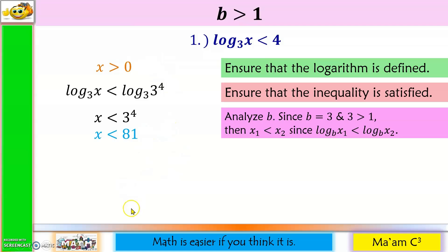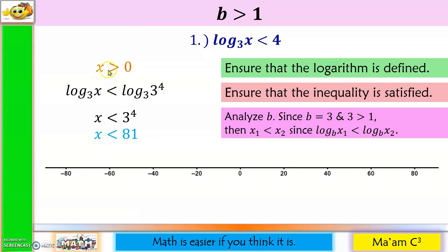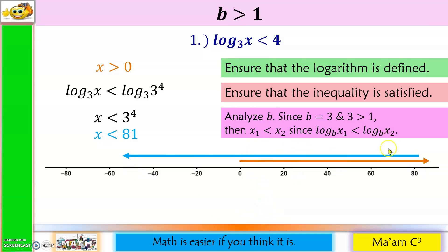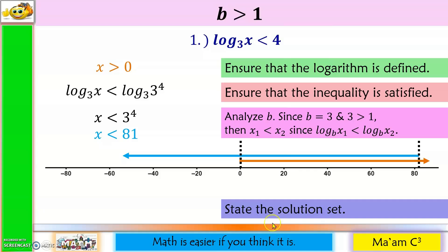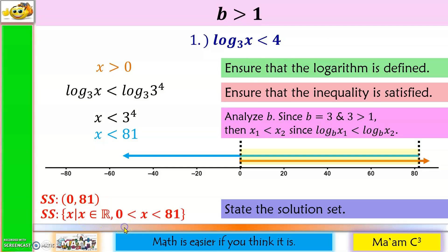Now we have two conditions. Let us plot them on a number line. Starting with x is greater than 0: here is 0, going to the right. Then we have x is less than 81, going to the left. We find the intersection of these two graphs to state our solution set. The intersection is from 0 to 81. So our solution set is (0, 81) — both parentheses because there is no 'or equal to.' In set-builder notation: the set of all x such that x is a real number where 0 < x < 81.